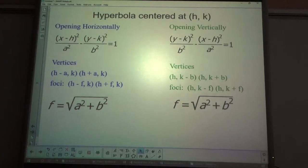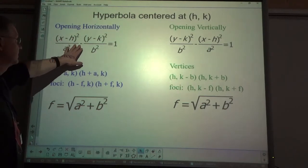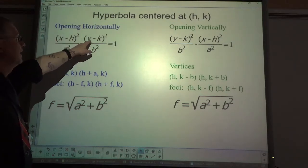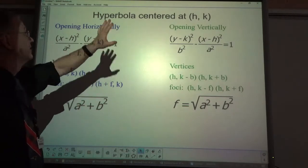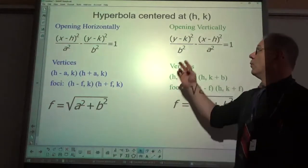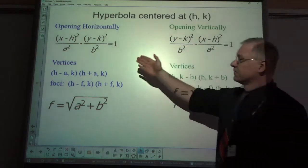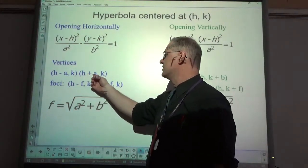Now let's look at the hyperbola when it's centered at (h,k). For a horizontal hyperbola, the x term is listed first in subtraction: x minus h squared over a squared minus y minus k squared over b squared equals 1. If it's vertical, the y fraction is listed first. The vertices are (h minus a, k) and (h plus a, k).